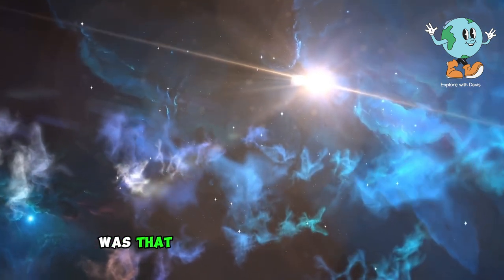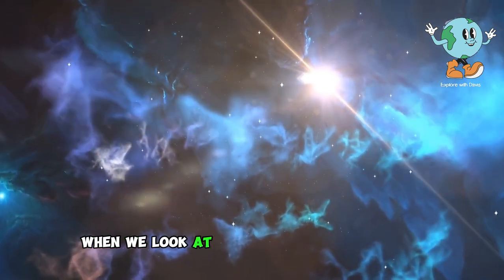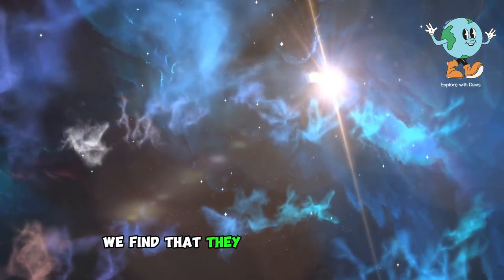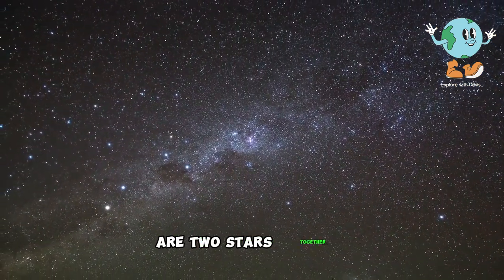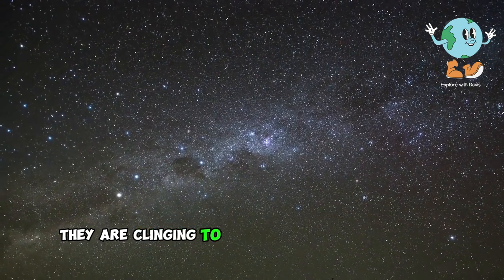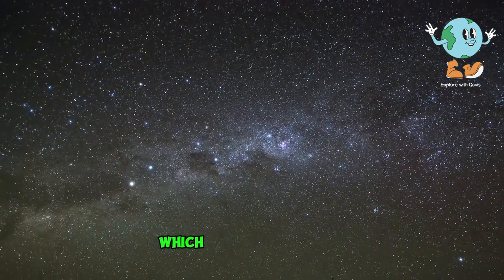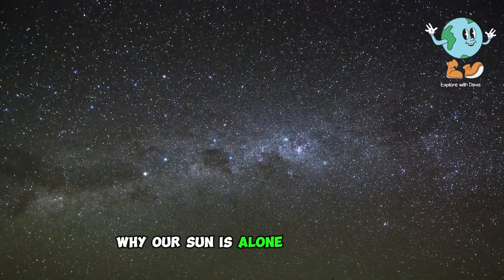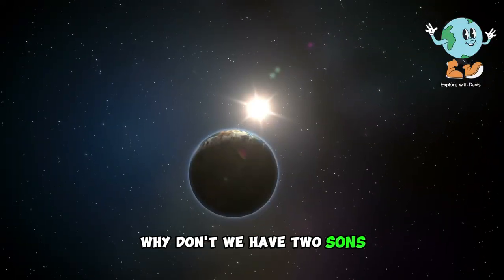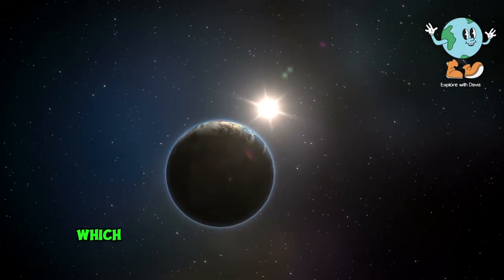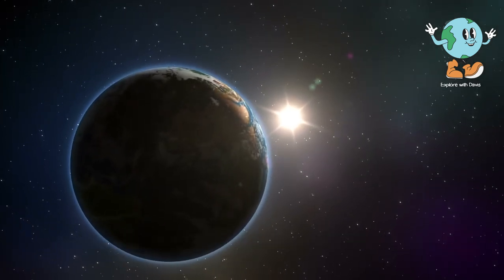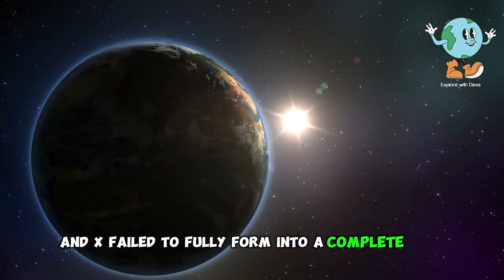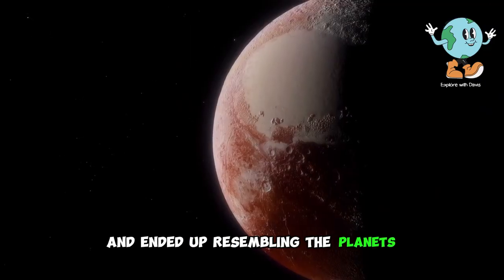What justified their thinking was that most of the stars in the sky, when we look at them through a telescope, we find that they are binary systems, meaning that most of the stars that exist are two stars together, and sometimes they are clinging to each other and exchanging gravity, which makes us wonder why our sun is alone and isolated. Why don't we have two suns like most other solar systems, which made them believe that Planet X was potentially the second sun? But our sun exhausted most of the matter and X failed to fully form into a complete star and ended up resembling the planets.